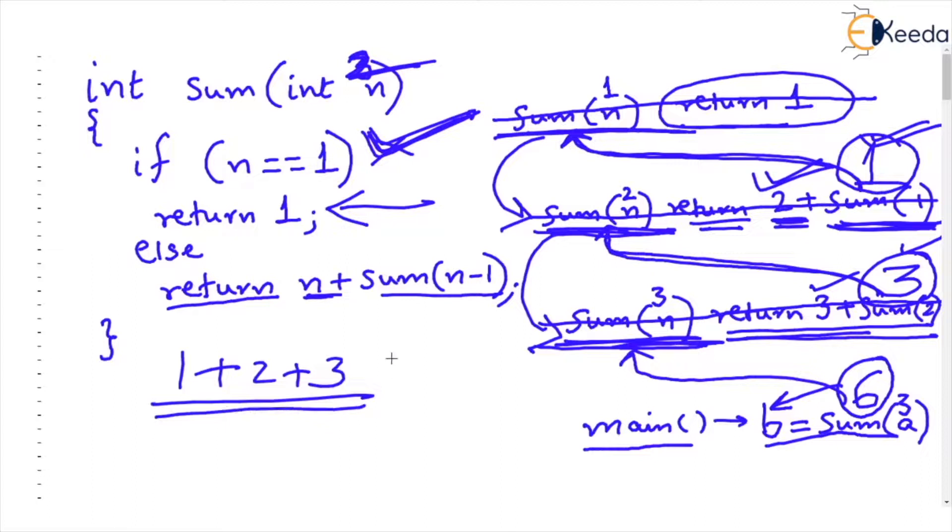I hope you have understood how this sum function actually executes. We saw this formulation that sum n is equal to n plus sum of n minus 1 numbers. We saw this recurrence formula in the previous video and we also saw that if we are finding sum of 1 number then we will not use the formula. If we are finding sum of 1 number we will simply return 1.